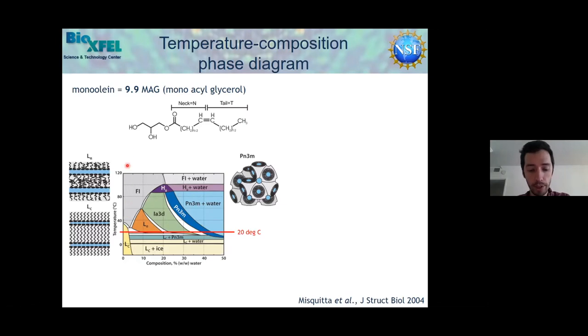Here we see a temperature-composition phase diagram of monoolein 9.9 MAG with the LCP highlighted as a blue area PN3M. There are also other phases which can still be cubic phases. You could over-hydrate your LCP to form a mixed phase. Some of these phases you can distinguish visually. For example, this lamellar L alpha phase is strongly birefringent under cross-polarized light, and over-hydrated LCP looks hazy whereas proper LCP is clear.